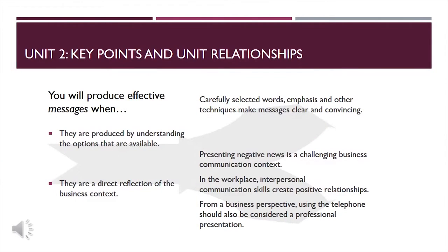Here are some key points from Unit 2 and examples of how they are related to the content of other units. Unit 2 emphasizes how an effective communicator knows what options are available for producing messages and selects the best option based on the business context. This point is connected to information in Unit 10, which discusses how an effective communicator chooses words and other techniques to produce messages that are clear and convincing. The communicator also knows that the business context usually dictates message traits and formats.